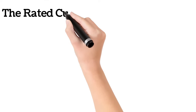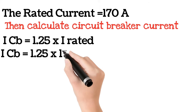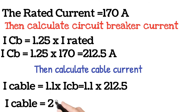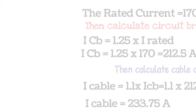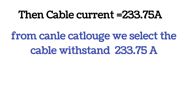Now rated current equals 170 ampere. Then calculate the circuit breaker current, then calculate cable current. From the cable catalogue, we select the cable that can withstand 233.75 ampere.